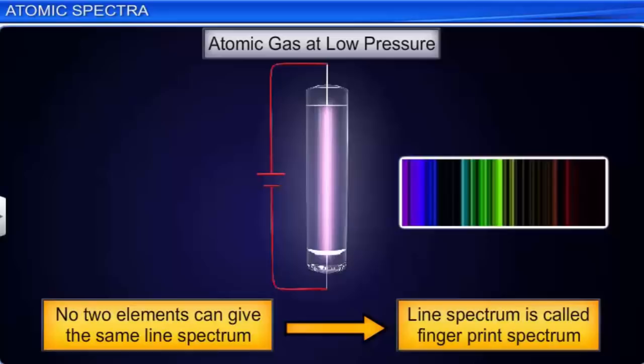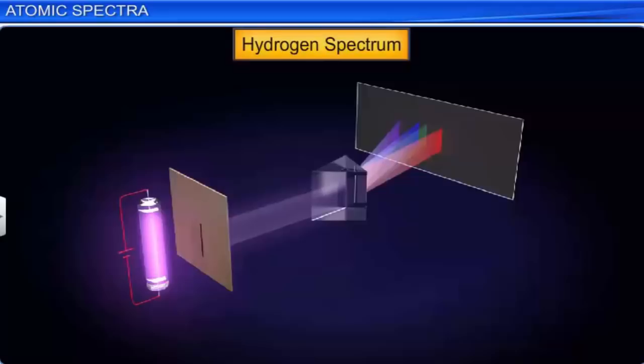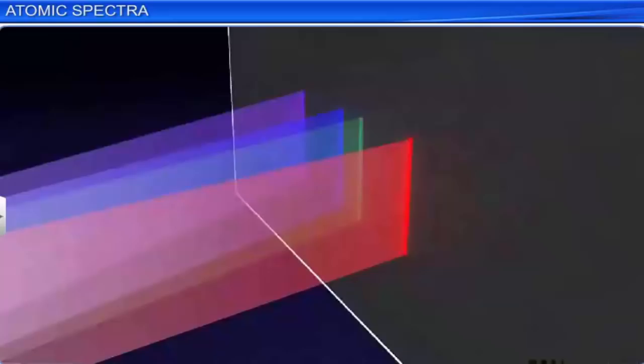Looking at the hydrogen spectrum again, the spectral lines can be grouped into separate series. In each series, the separation between successive wavelengths decreases as we go from higher wavelengths towards lower wavelengths. Each such set is called a spectral series. An important point to remember is that the wavelengths in each series approach a limiting value known as the series limit.